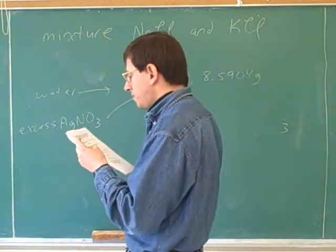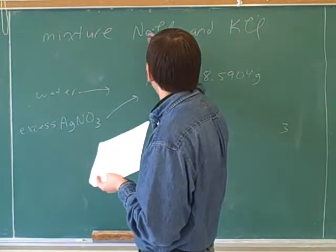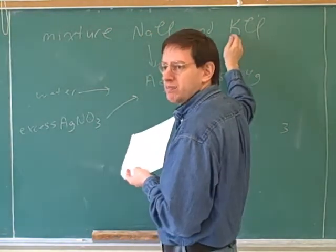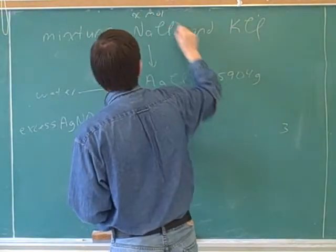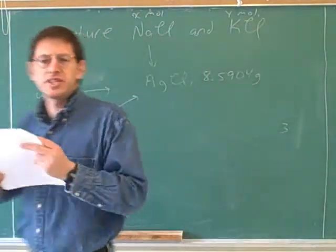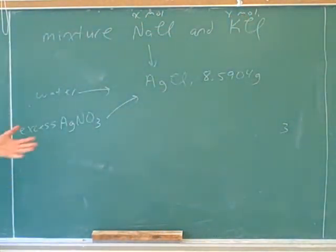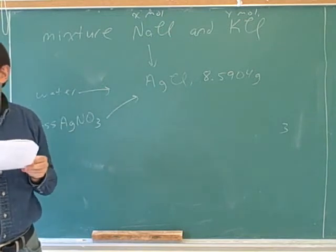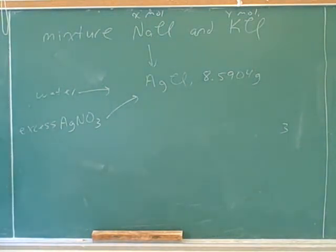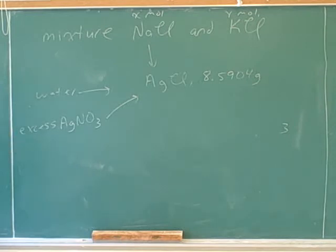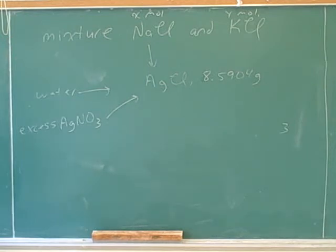What would be really helpful here is to know how many moles of sodium chloride we started with, and how many moles of potassium chloride. If we could figure out how many moles of each we started with, we could then figure out what percent of the original was sodium chloride. So what we need to do is write a bunch of equations that have x and y in them, and if we get enough equations, we'll be able to solve for x and y. How many equations are we going to need? Two — because we have two unknowns.